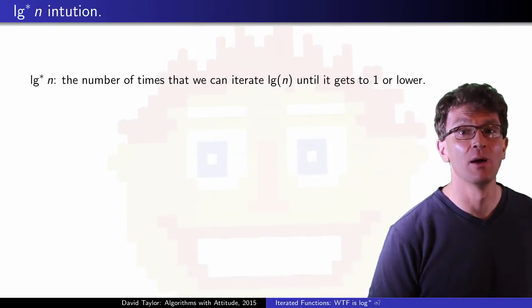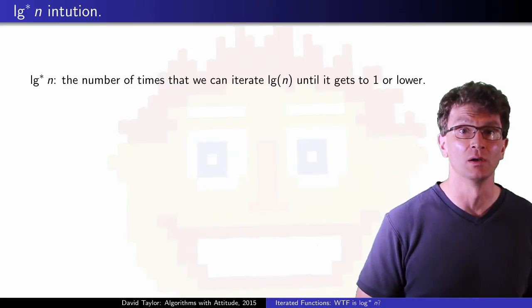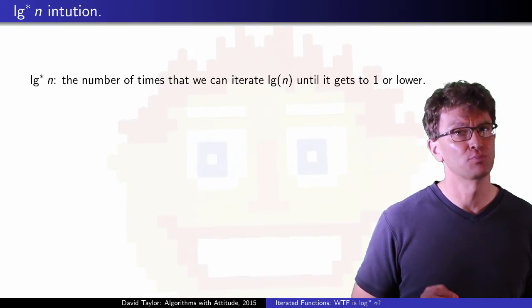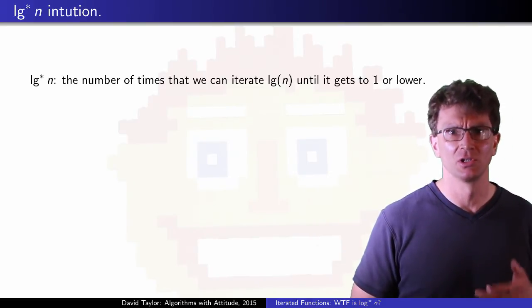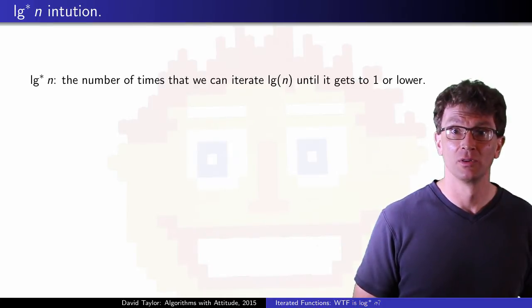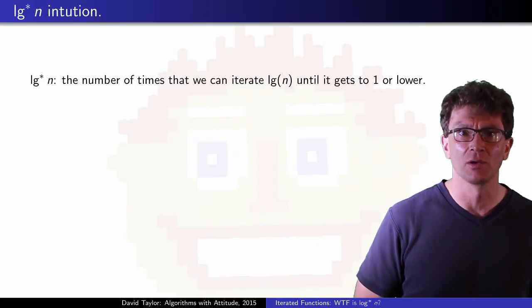So, log star of n is the number of times that we can iterate the log function until we get down to 1. Without context, that definition looks pretty arbitrary, but now we know that it just follows the same pattern as the other functions, subtraction, division, logarithm, in terms of that we know those functions well.